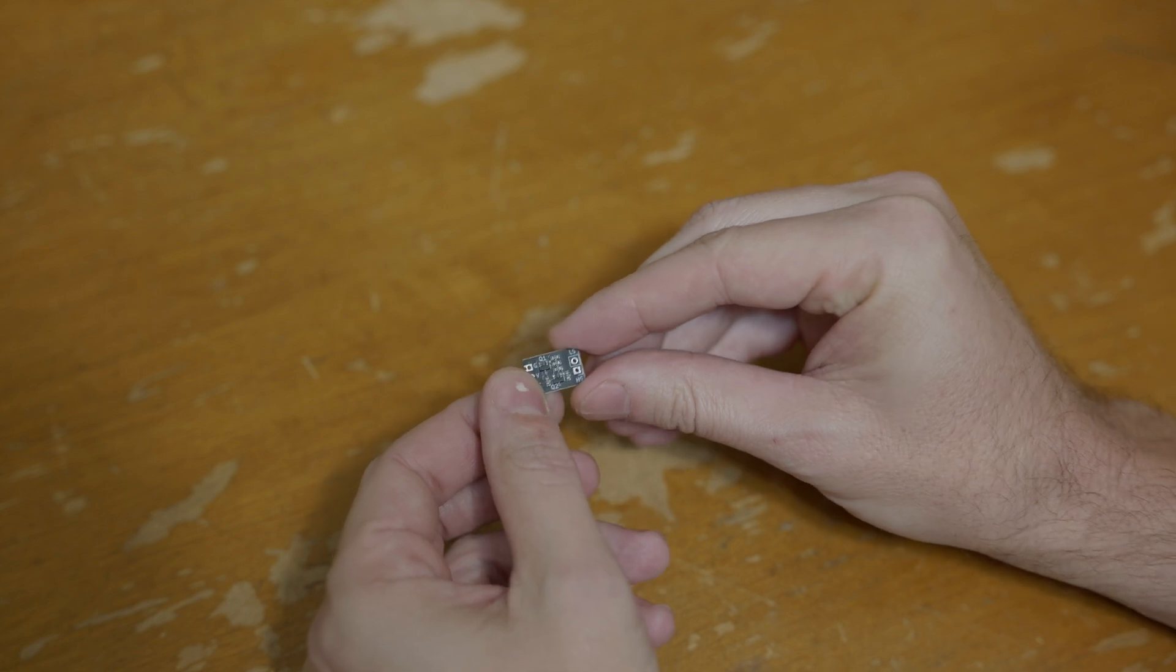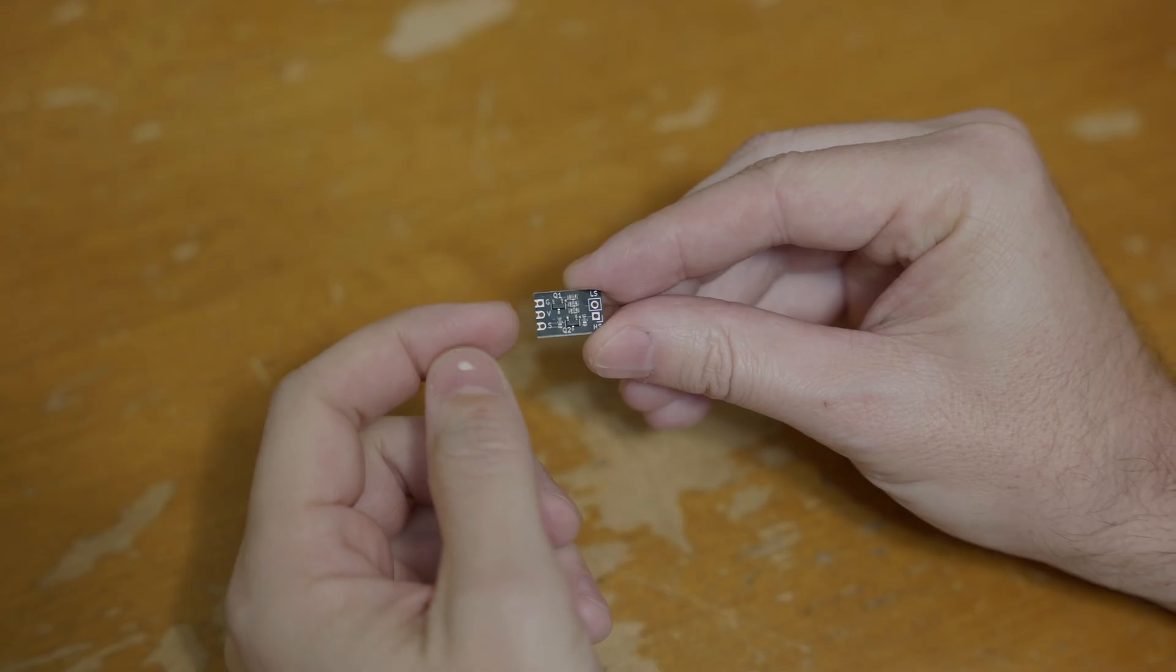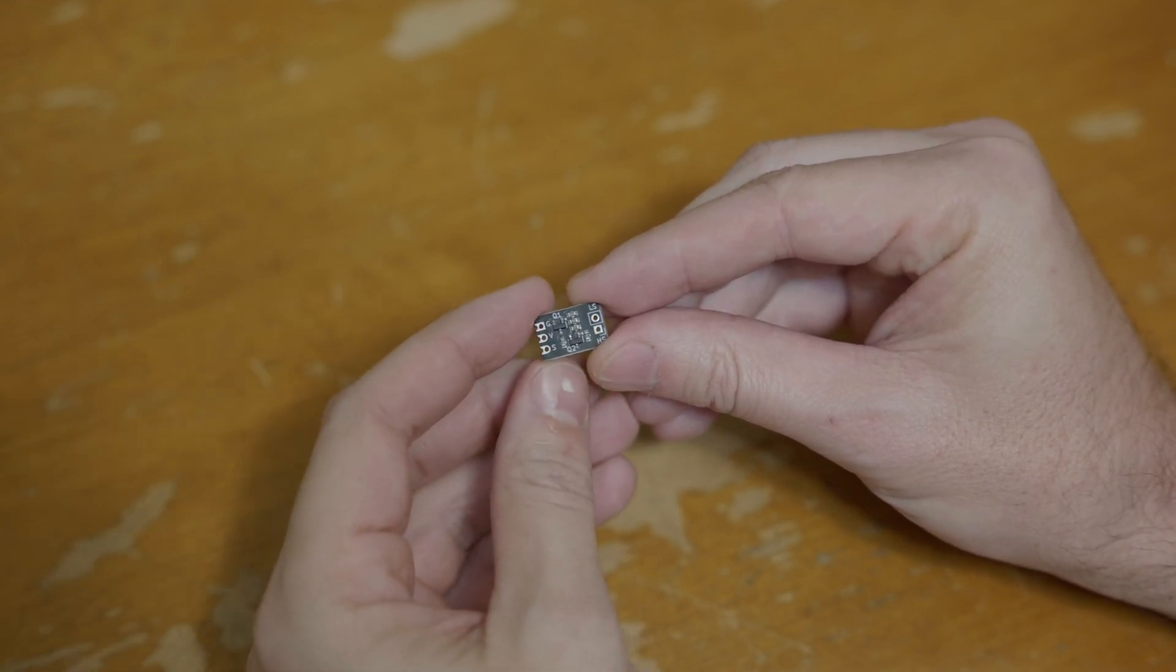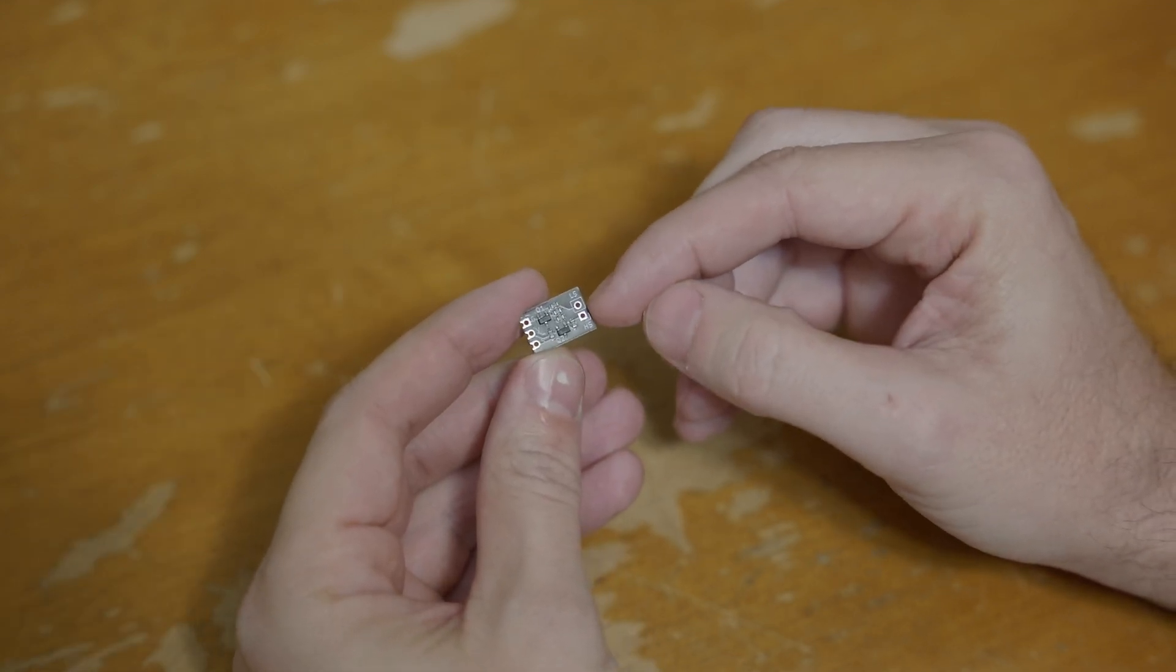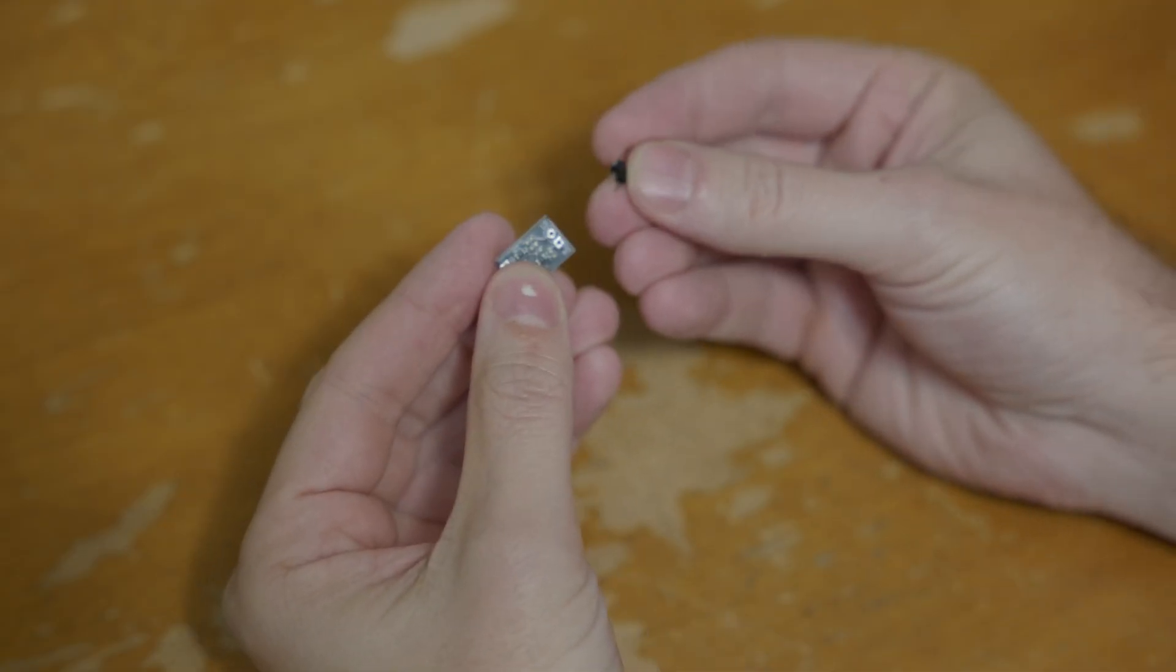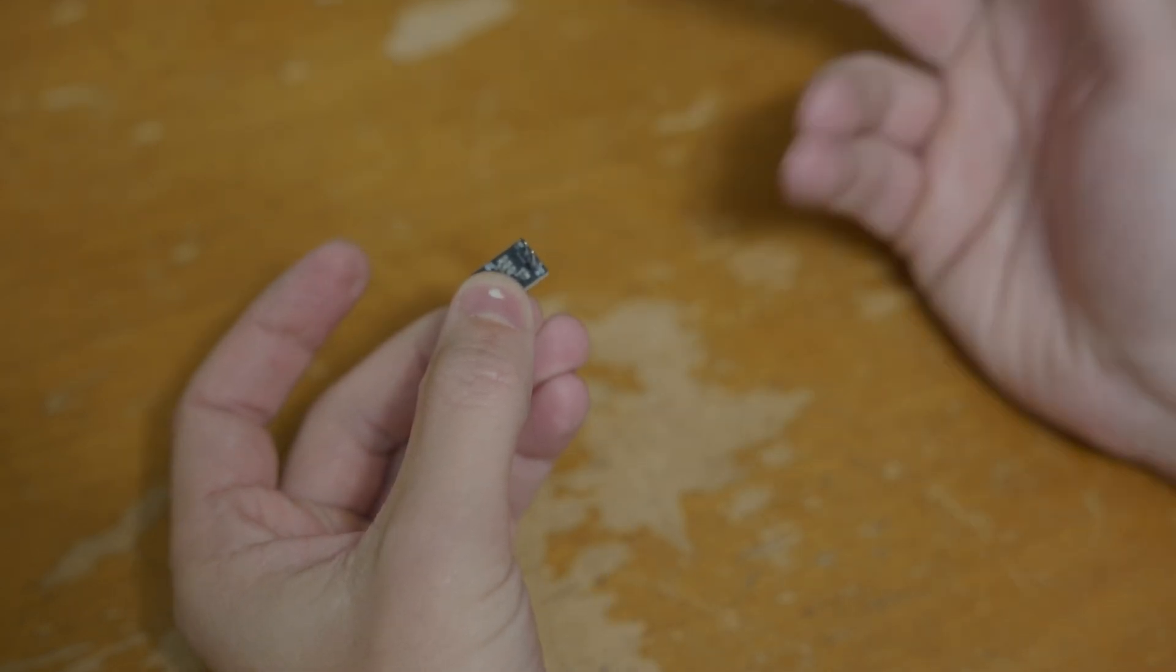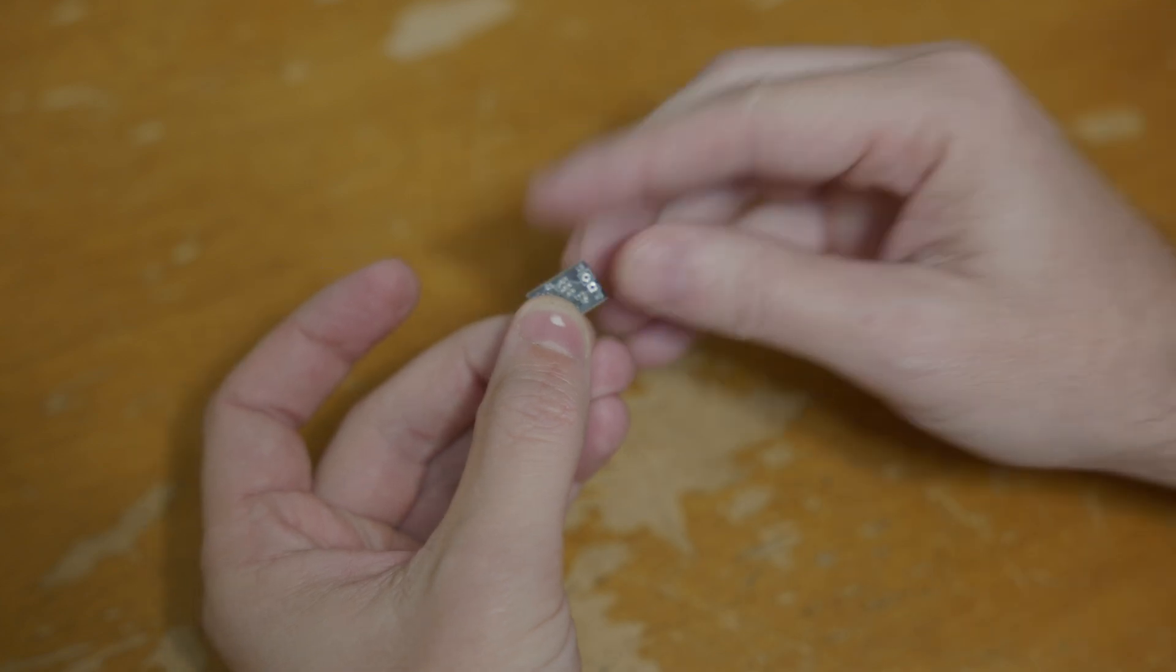Now, one thing I did spend the extra money on are the castellated edges here on the side. And to explain why I have those, let's go ahead and get into the pinout of this thing. On this side, we've just got the sense pins. And the pins are just standard pin header spacing, so you can use pin headers, or you can use any other wires that you want for your sensor leads.